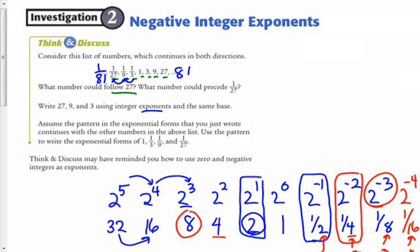So it says write 27, 9, and 3 using integer exponents in the same base. 27 is multiplying by 3 three times, so 27 is 3 to the third. 9 is multiplying by 3 twice, 3 times 3 is 9. And 3 is just multiplying by 3 one time, which is 3 to the first.